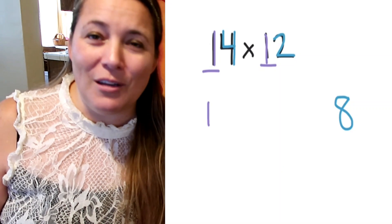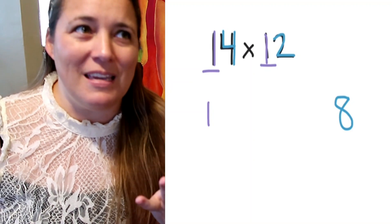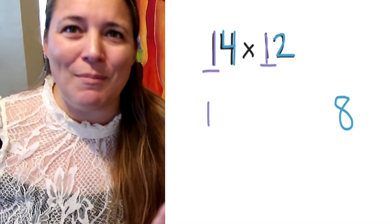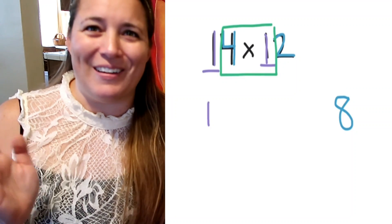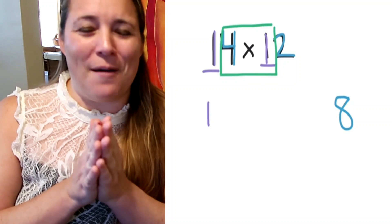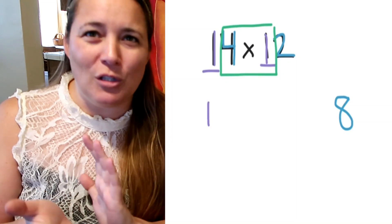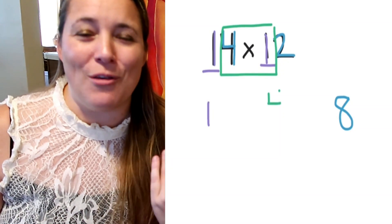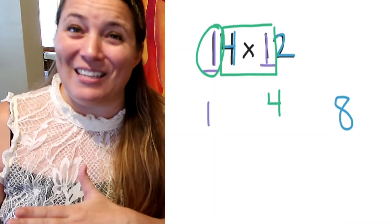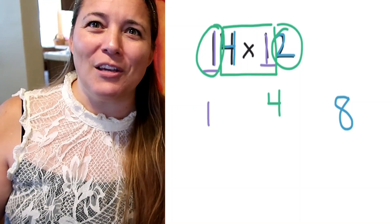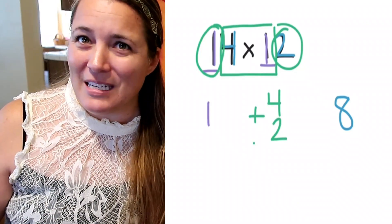Now to figure out the middle number, we multiply the combinations we haven't done yet. Think of it almost like an Oreo cookie — the middle part we've not multiplied yet. That's the four and the one, so we multiply four times one and write down four. But we have another combination: the one and the two — the cookie part of the Oreo. One times two is two. When we add those together, we get six.